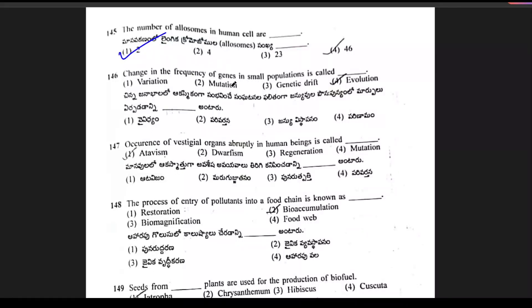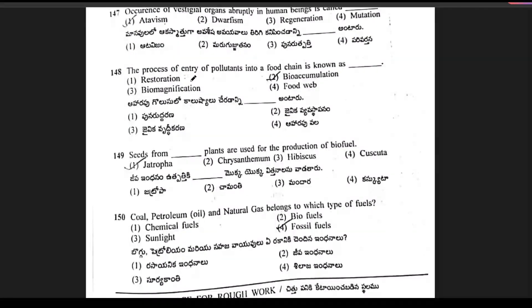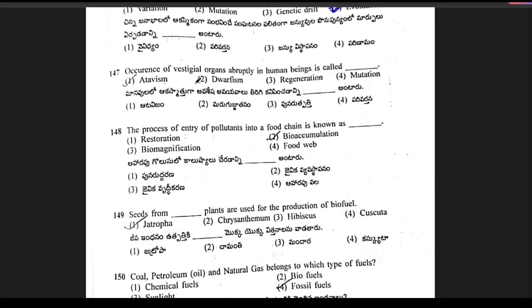Question 146: change in frequency of genes in small populations is called — it is nothing but genetic drift, which relates to evolution.